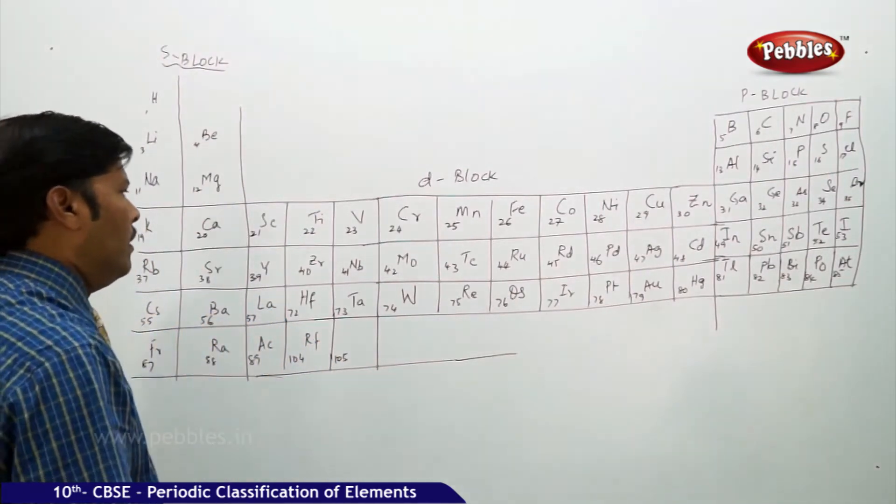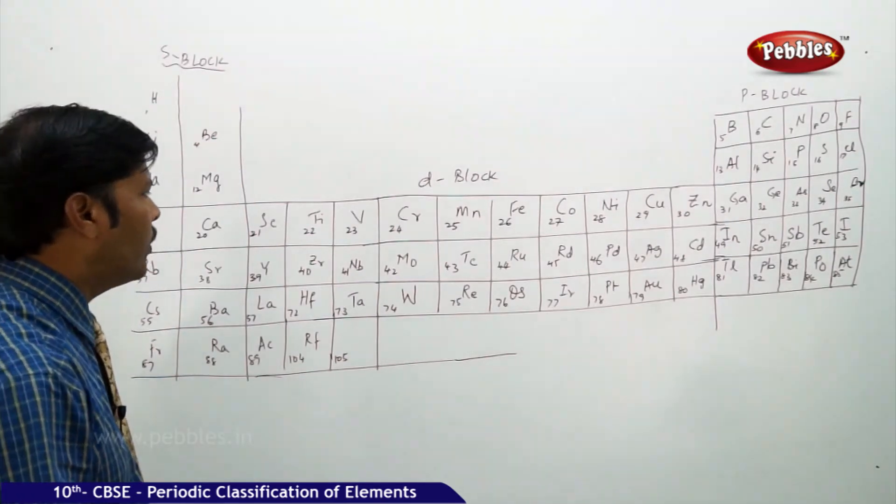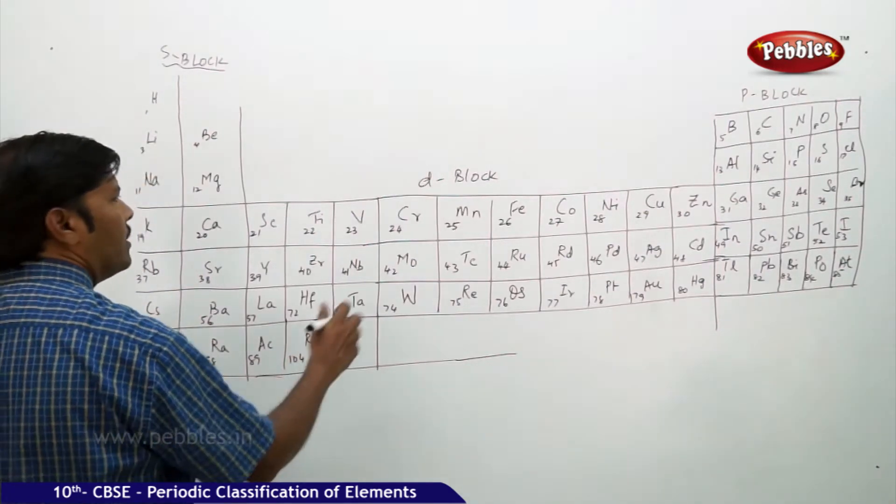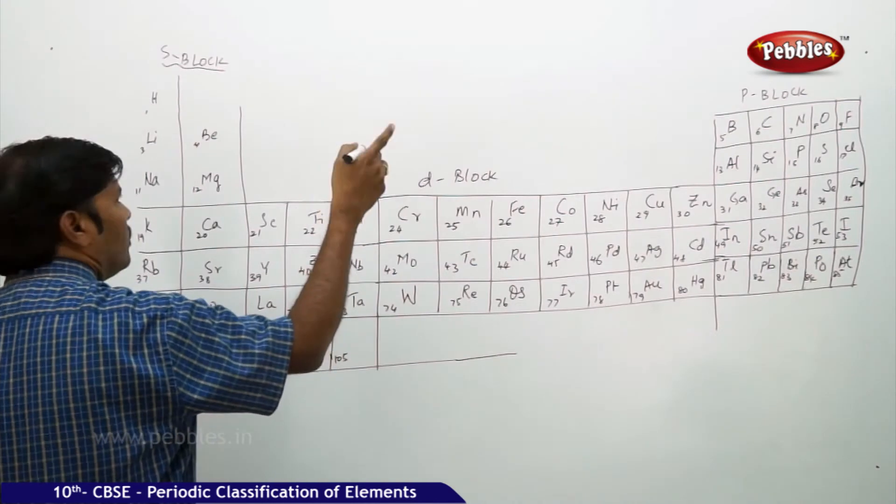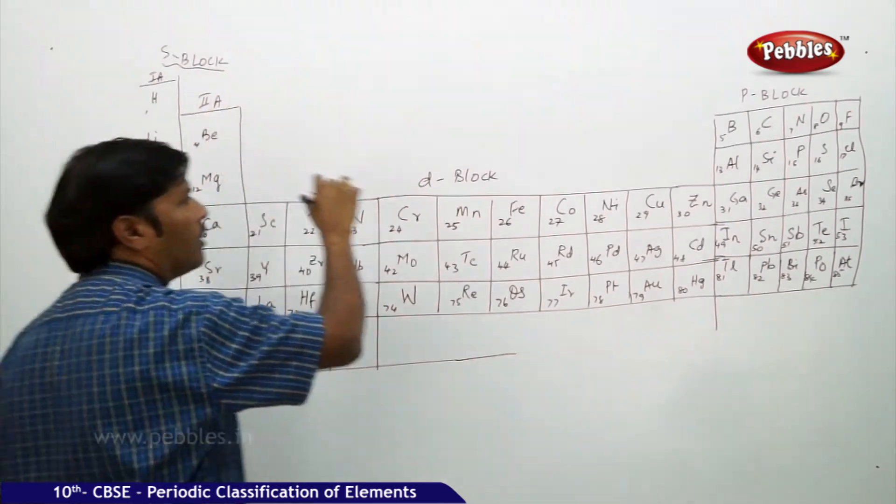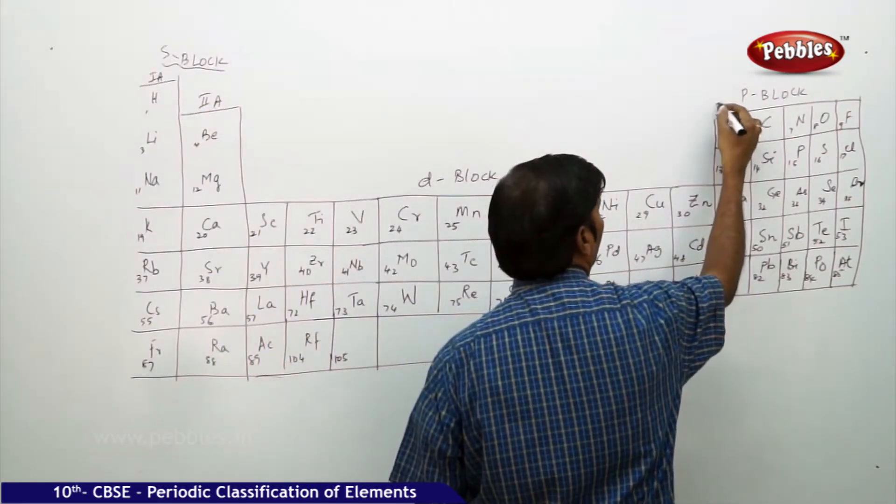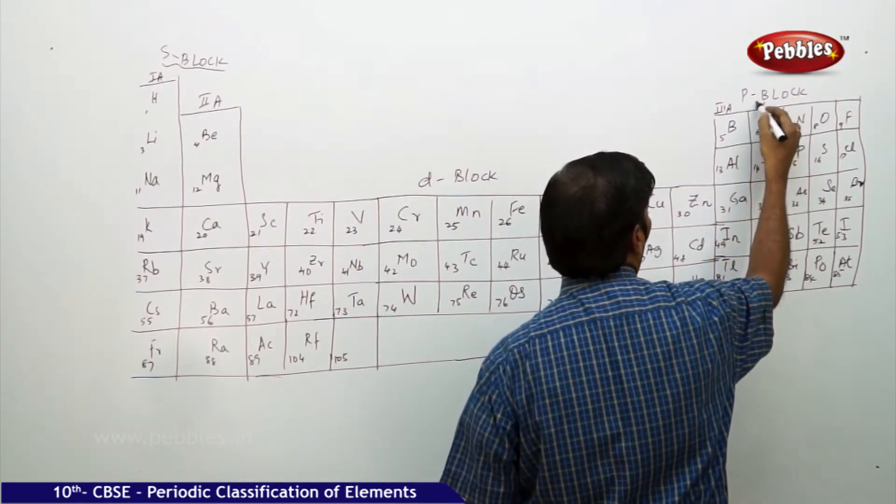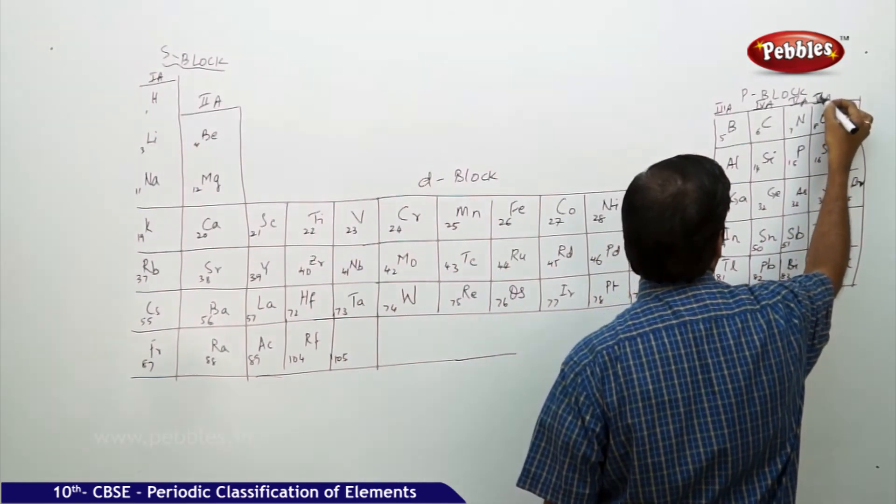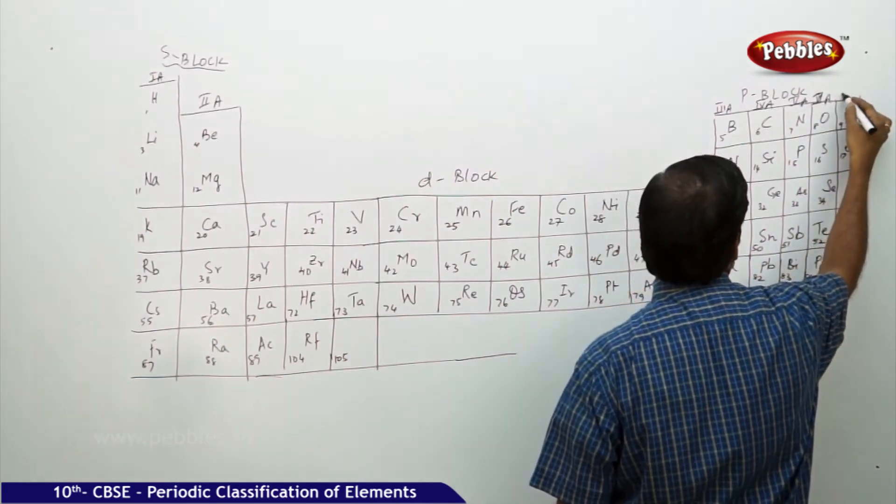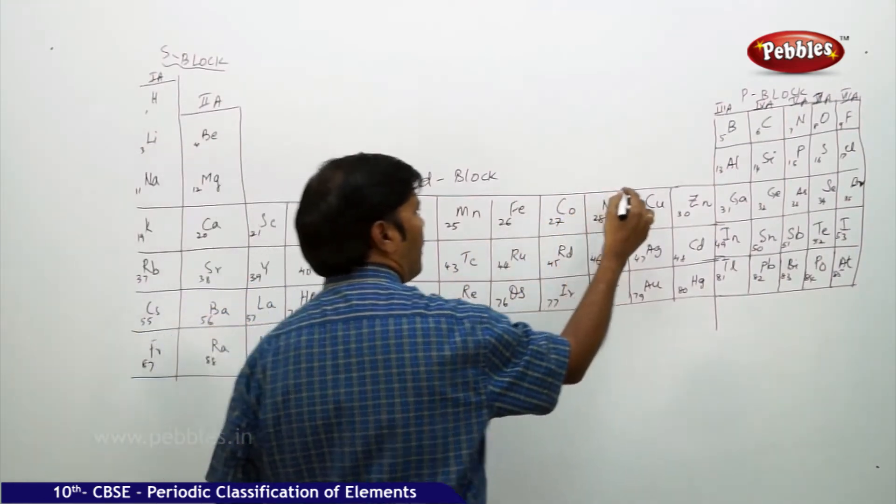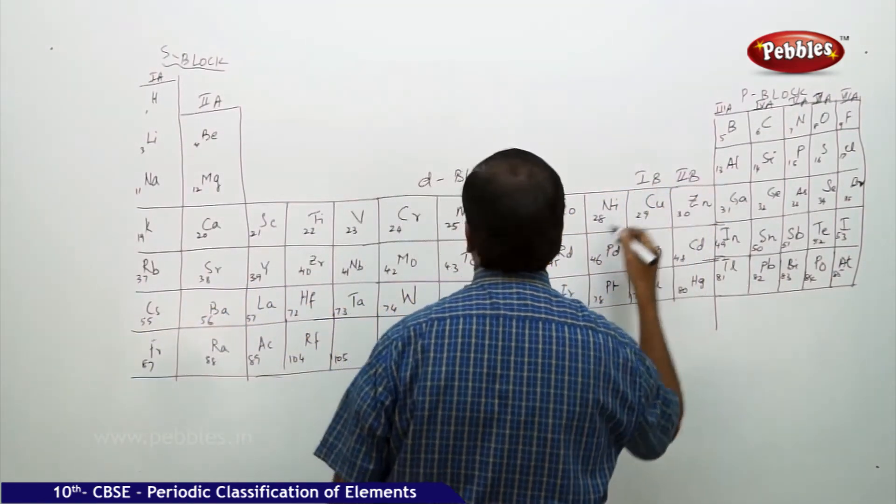56, 57 is lanthanum, 72 hafnium, 73 tantalum, and 74 is tungsten. Similarly, 89 is actinium, 104 Rutherfordium, 105 Dubnium and so on. It's an incomplete period. 44 Ruthenium, 45 Rhodium, 46 Palladium, 75 Rhenium. This is D block. This is 1A group alkali metals, 2A group alkaline earth metals.